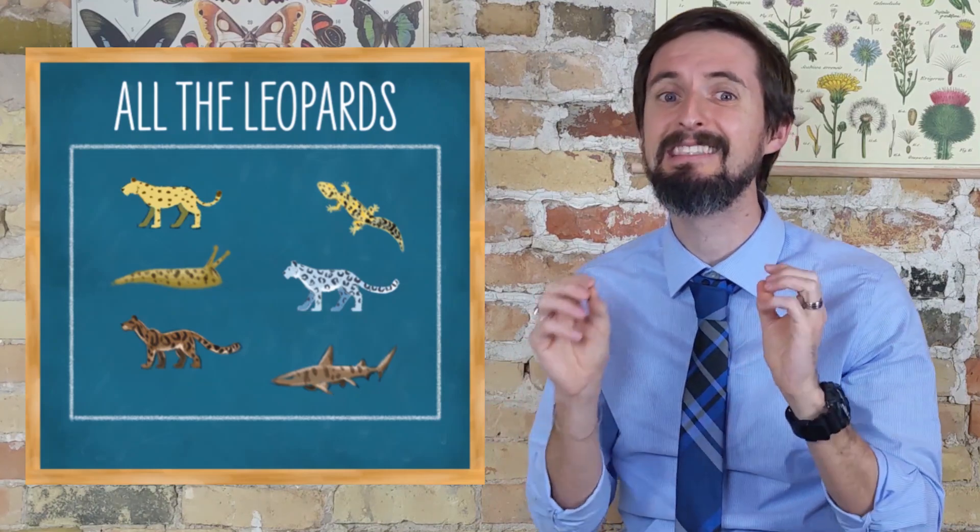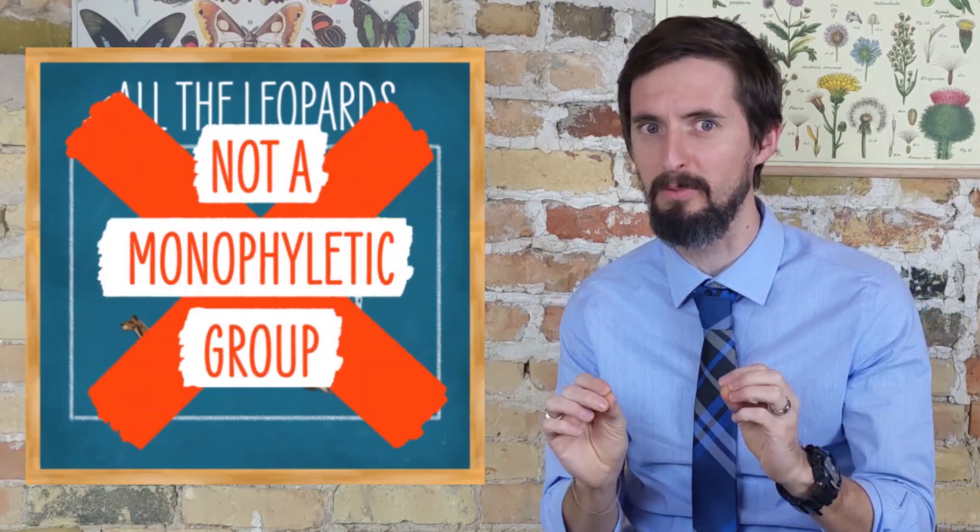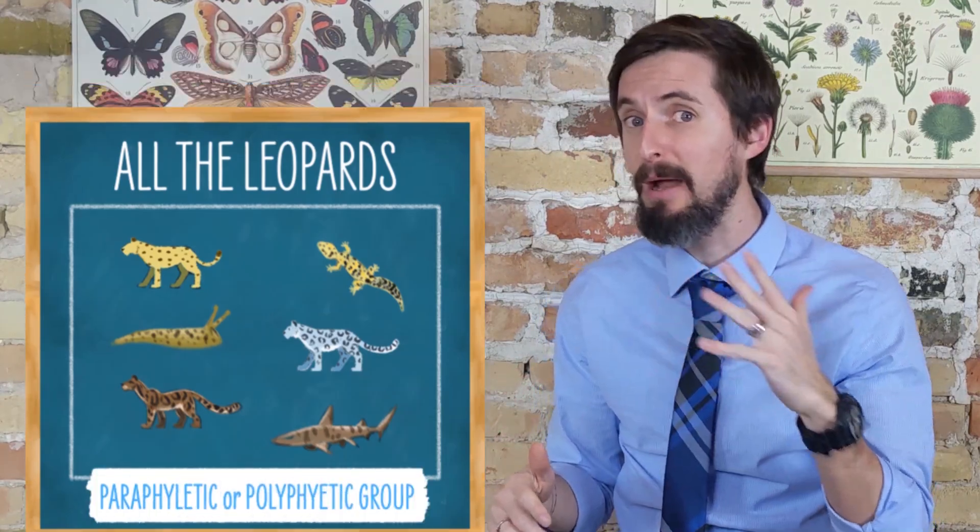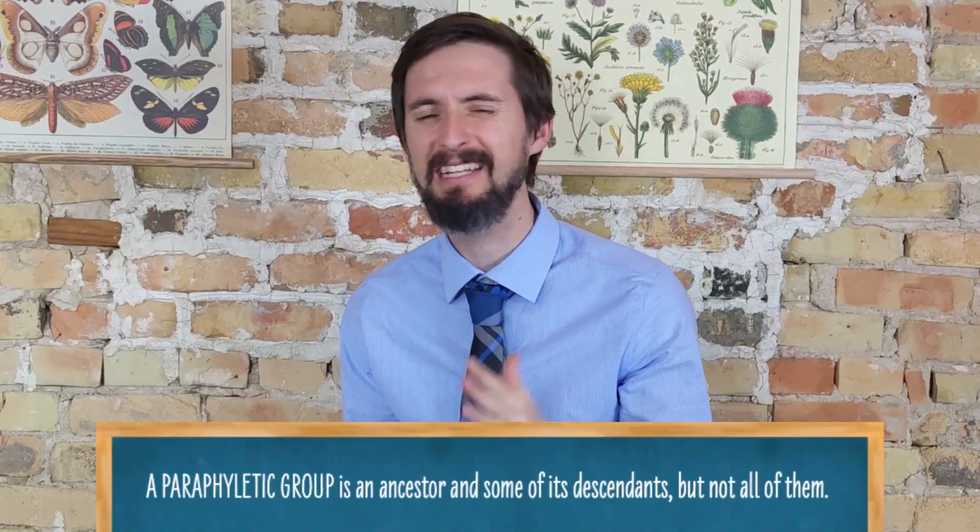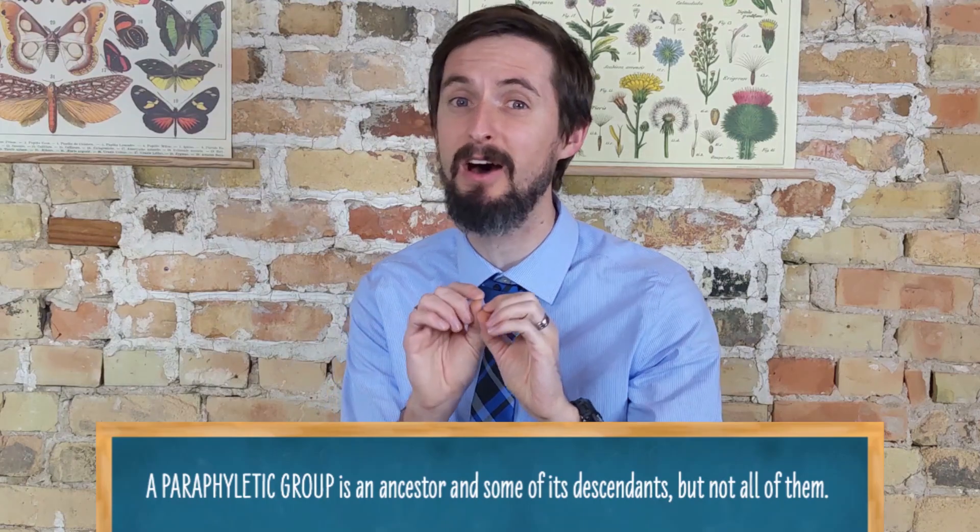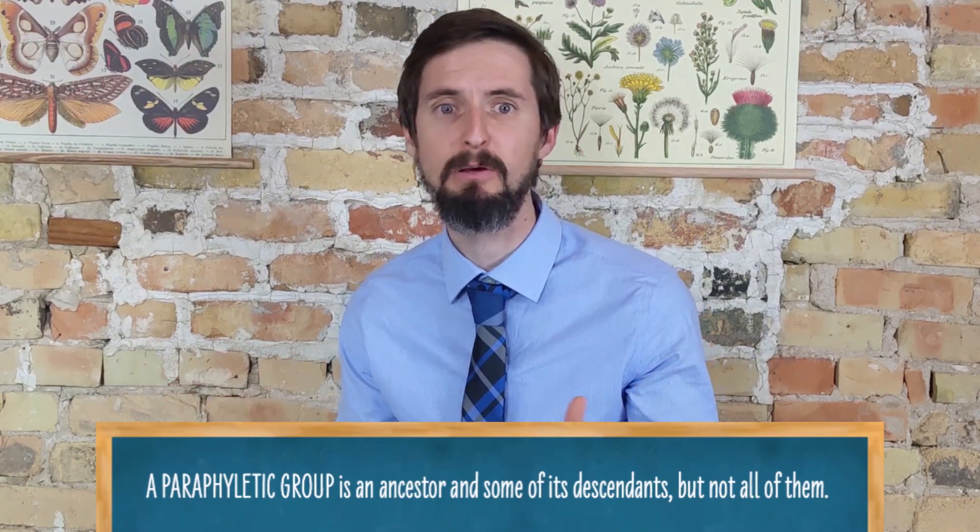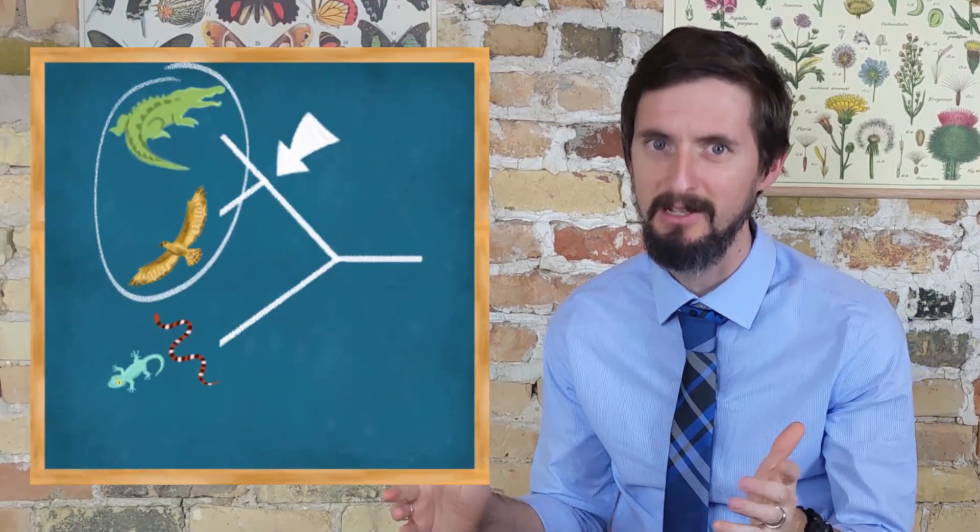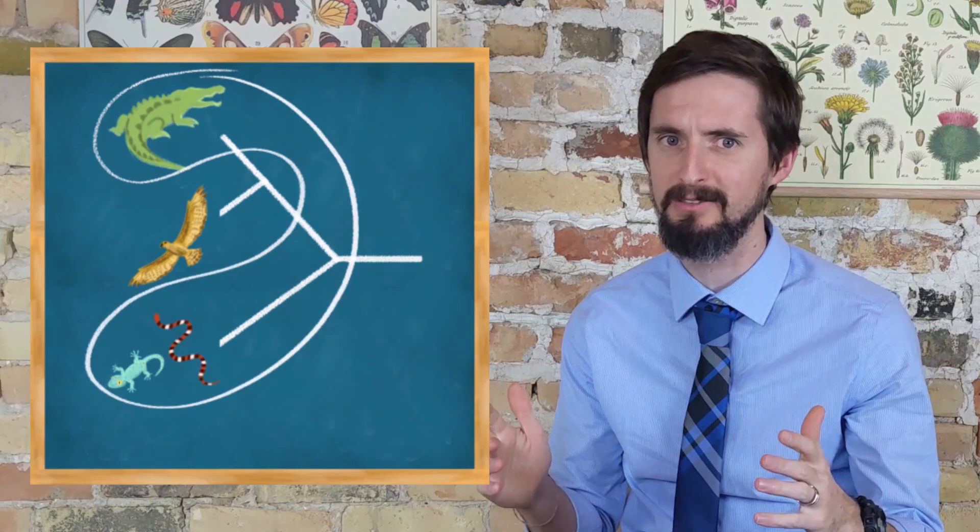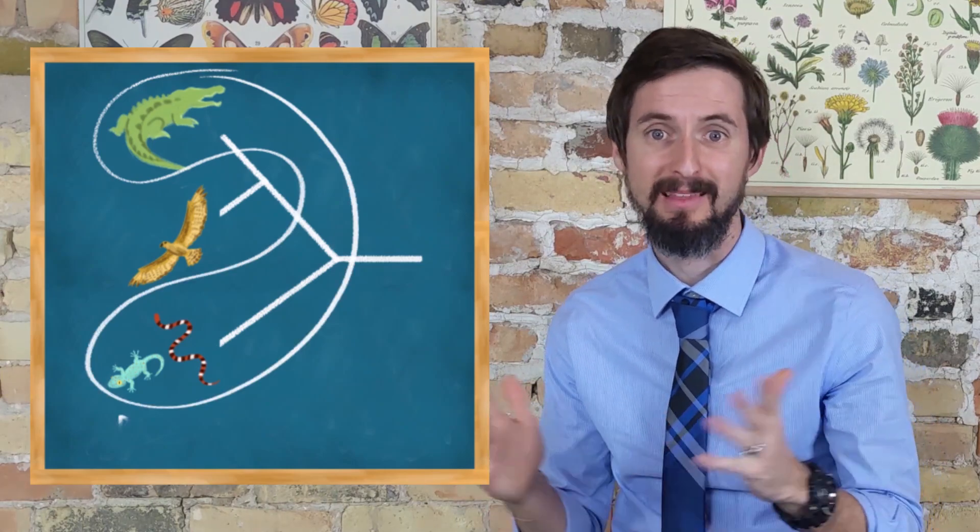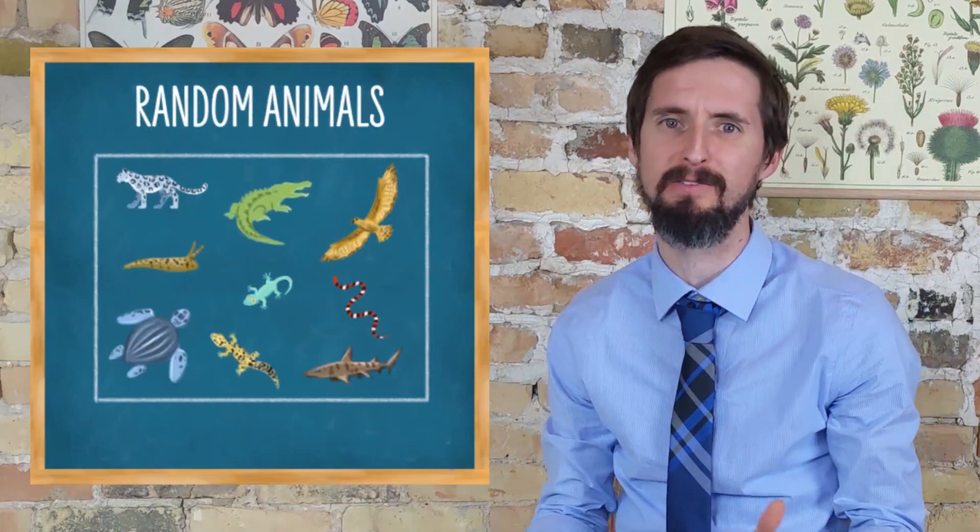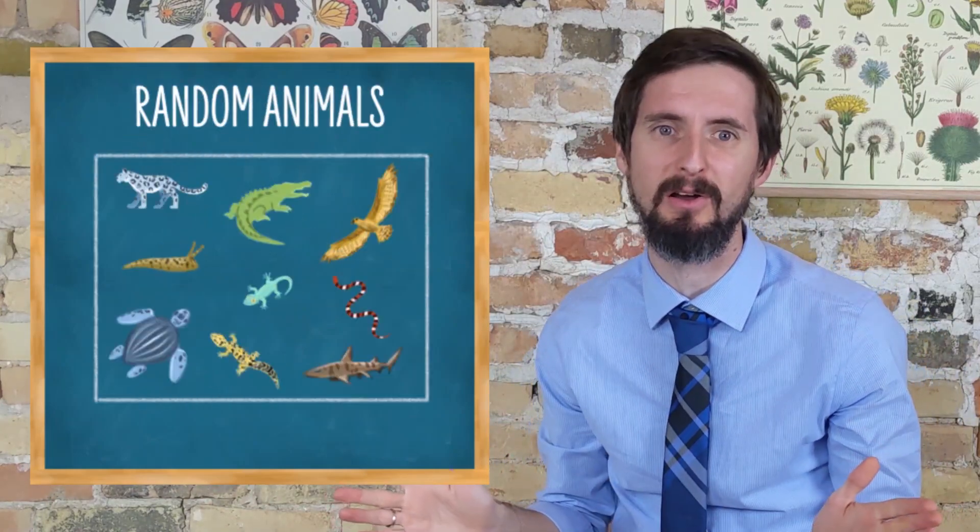It is either a paraphyletic or a polyphyletic group. A paraphyletic group is an ancestor and some of its descendants but not all of them. A good example of this would be reptiles if I don't include the birds. Birds are more closely related to crocodilians than crocodilians are to lizards. So if I make a group called reptiles except for the birds, well, I have a paraphyletic group. If I put organisms from all over the tree of life without any real regard for their evolutionary relationships at all, that is called a polyphyletic group.